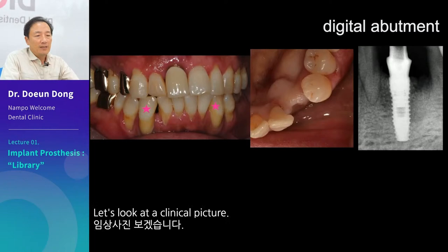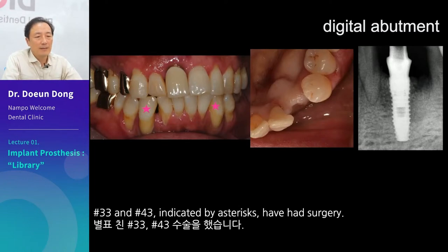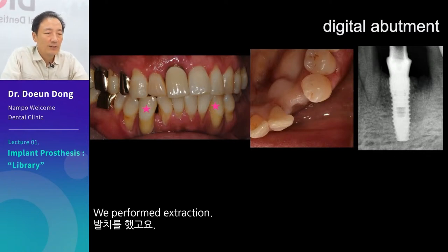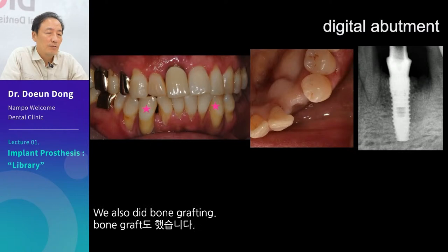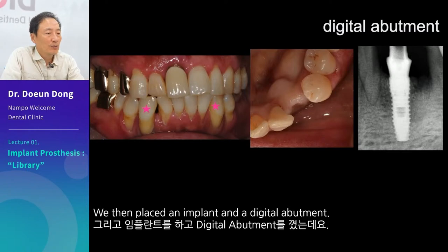Let's look at a clinical picture. Number 33 and number 43, indicated by asterisks, have had surgery. We performed extraction, bone grafting, using extraction and preservation techniques. We then placed an implant and a digital abutment. There are no gaps or fixtures on the X-ray.